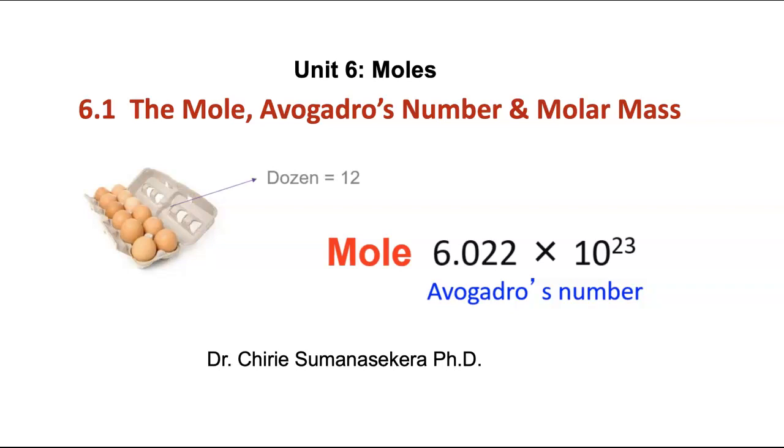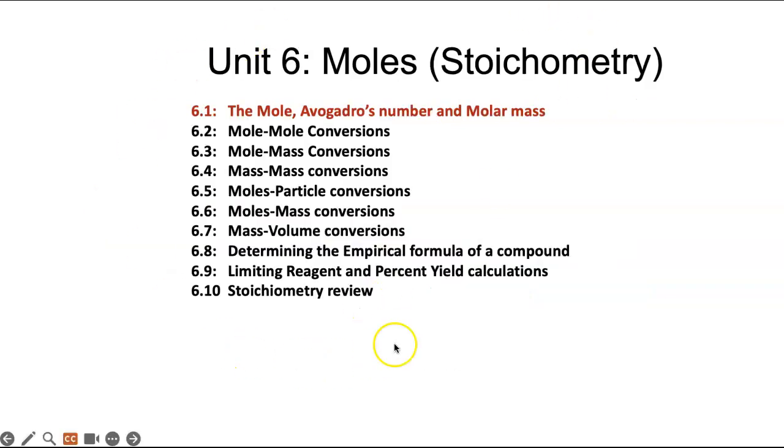Welcome to the first lesson of unit 6 on moles. 6.1: The mole, Avogadro's number and molar mass. The mole is a counting unit with a value of 6.022 times 10 to the 23rd. It's like 12. When you count eggs, you count in dozens. When you count atoms, molecules, and ions, we use moles. Here are the topics we're going to discuss in moles, also called stoichiometry. You don't need to write all these topics. We'll discuss them one by one.